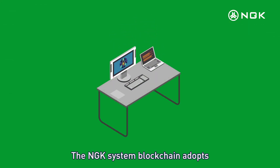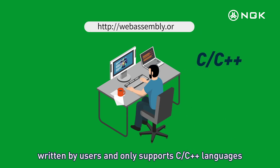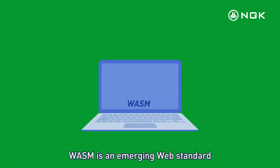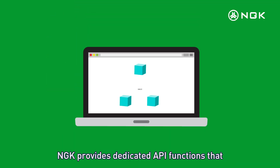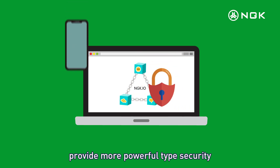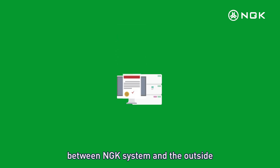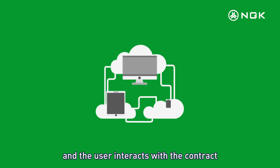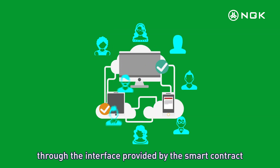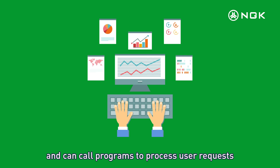Smart Contracts. The NGK system blockchain adopts WebAssembly to execute smart contracts written by users, supporting C and C++ languages. WASM is an emerging web standard widely used by Google, Microsoft, Apple, and others. NGK provides dedicated API functions offering more powerful type safety and reducing the difficulty of smart contract development. Smart contracts enable the interface between the NGK system and the outside world, allowing users to interact with the contract through the provided interface, and developers can define user-executable actions and process user requests.